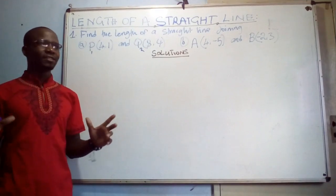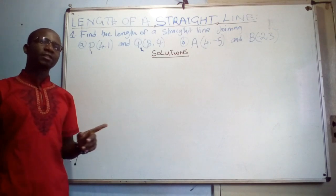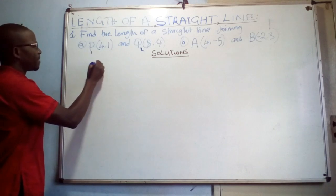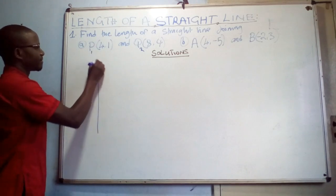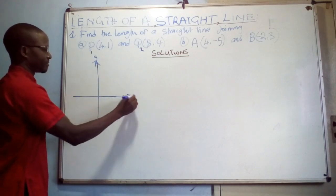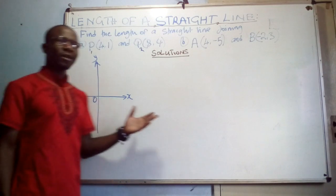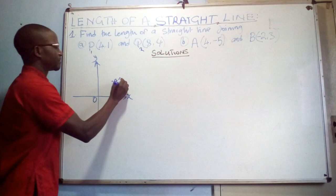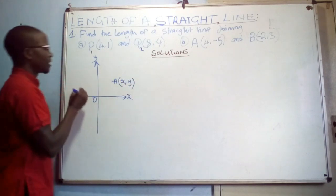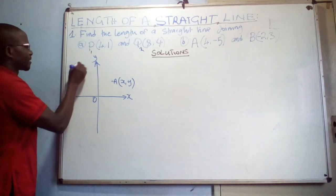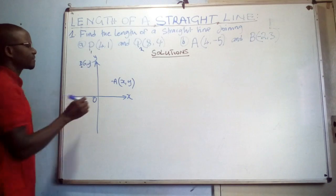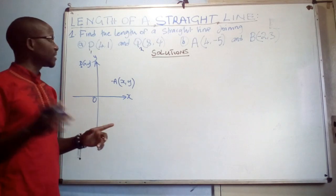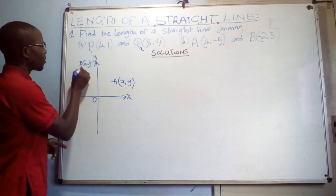A straight line can be drawn anywhere, but in this case our consideration is the length of a straight line drawn on the x-y plane. On the x-y plane you have the y-axis and the x-axis. On this plane you can draw a straight line — for example, you can have a point A at coordinates (x, y) and also a point B anywhere, also at (x, y). If these two coordinates are connected, the result is a straight line.